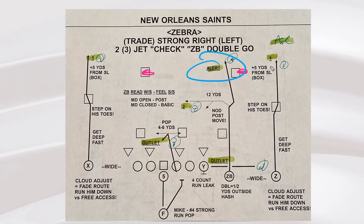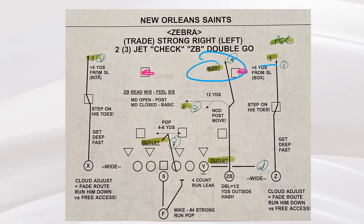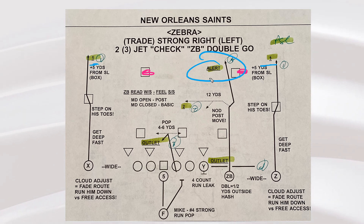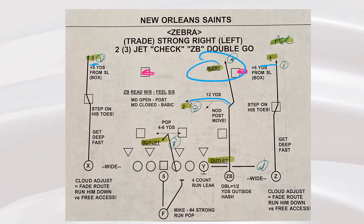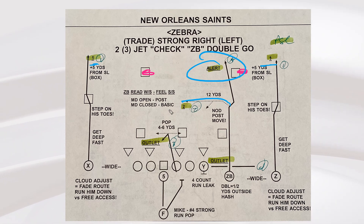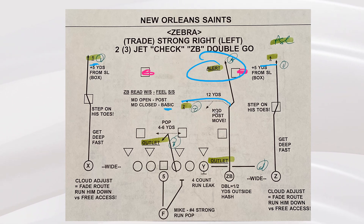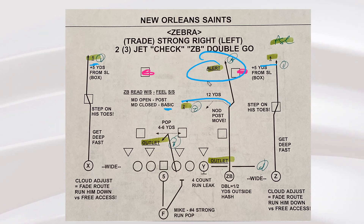That goes from the outside receivers being normally number one — pick a best matchup, throw a go, all sorts of things — to now we want to play this inside out, one to two. Now if it's closed, you can see that turns off into a basic right there: an in route, a hunt, a dig, whatever you want to call it. So that's just one example. Alert changes the read.